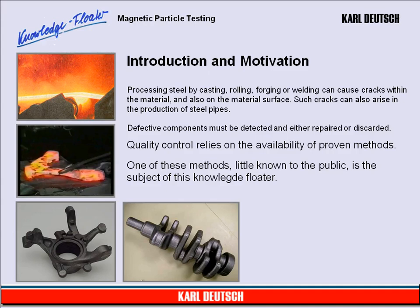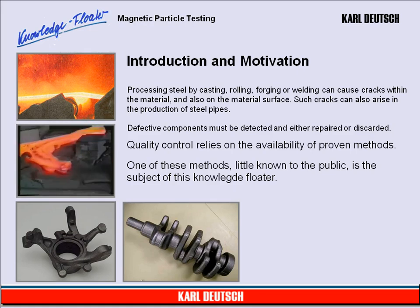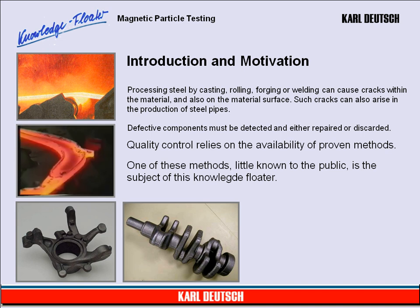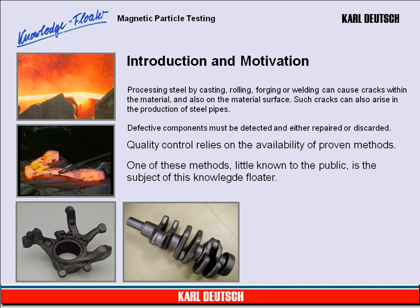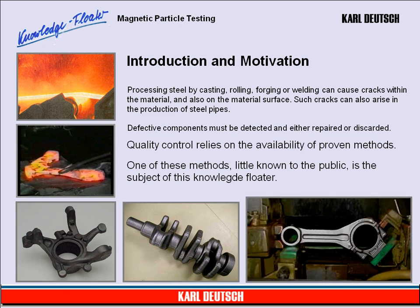Introduction and Motivation. Processing steel by casting, rolling, forging or welding can cause cracks within the material and also on the material surface. Such cracks can also arise during the production of steel pipes. Defective components must be detected and either repaired or discarded. Quality control relies on the availability of proven methods. One of these methods, little known to the public, is the subject of this knowledge floater.